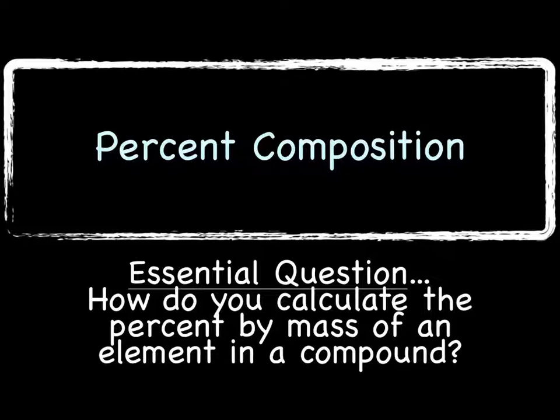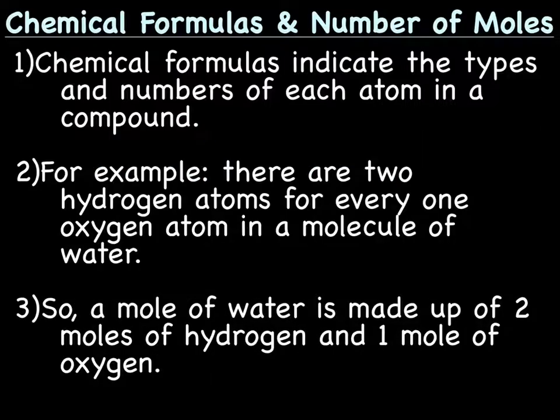Today you'll need your periodic table and calculators handy. Alright, quick review of chemical formulas and how they're related to number of moles. A chemical formula indicates the type and number of each atom in a compound. For example,